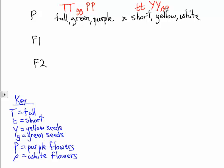And the second parent, little t, little t, big Y, big Y, little p, little p. We can easily see that all of their F1 offspring are going to be big T, little t, big Y, little y, big P, little p.